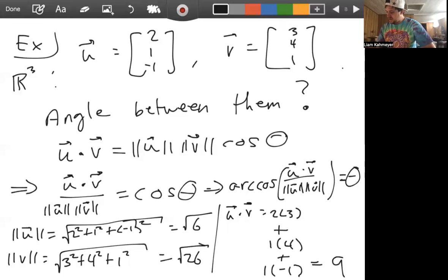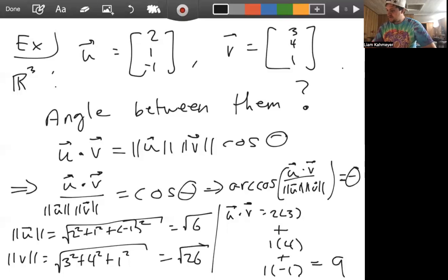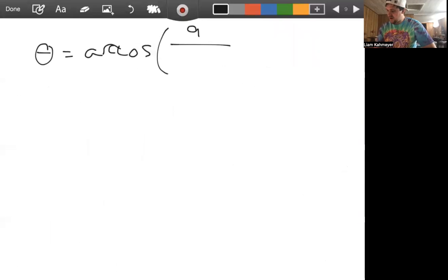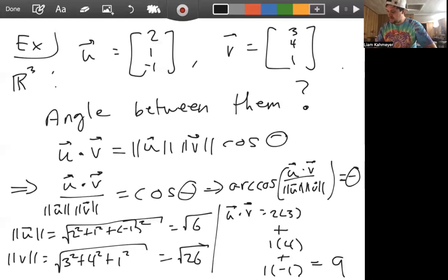And so what we're going to get here is that theta is arc cosine of U dot V, which is 9, divided by—hang on, I'm bad at math—let me take 6 times 26, that's 156. So root 156, because if you took root 6 times root 26, that would be the square root of 6 times 26, which gives us root 156.